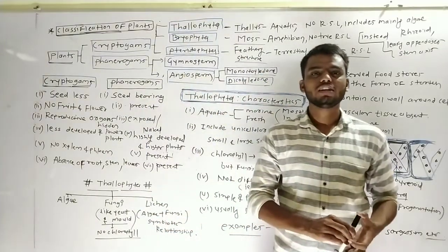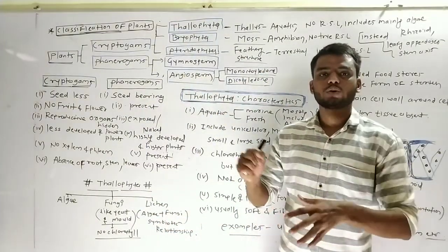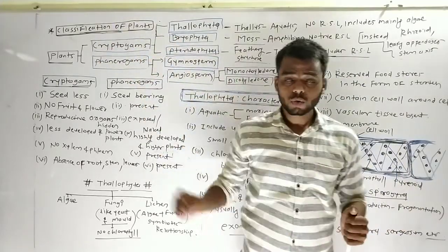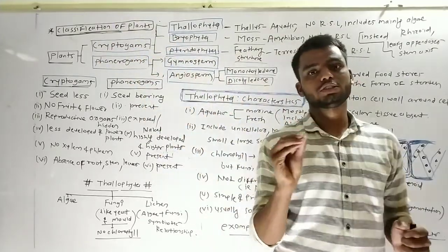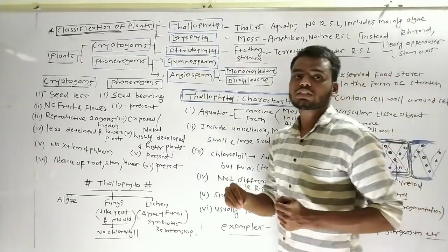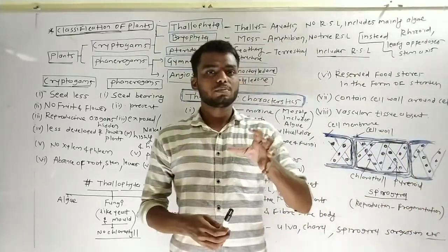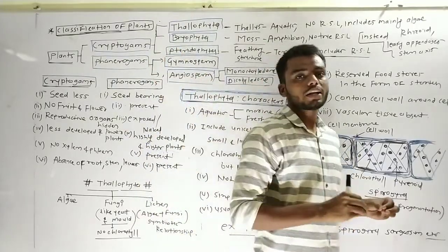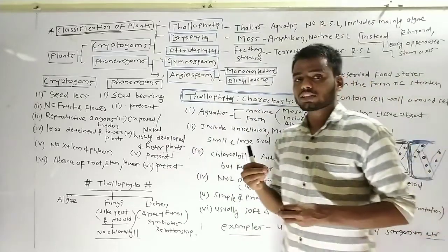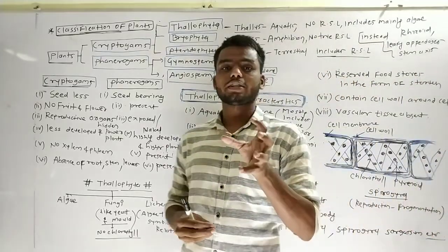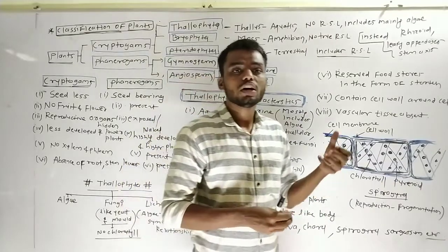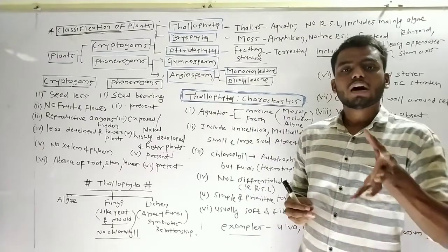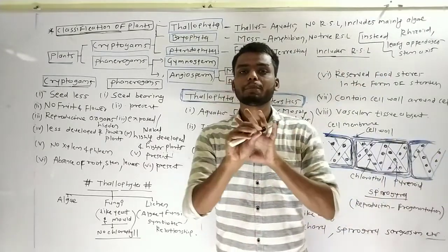Hi friends, welcome to my YouTube channel. In the previous lecture we started chapter number six, which is the classification of plants from the science and technology book. We discussed the five kingdom classification of living organisms, because plants are also living organisms. The five kingdom classification system was given by R.H. Whittaker in 1959.